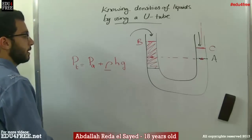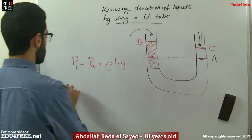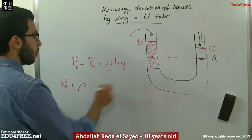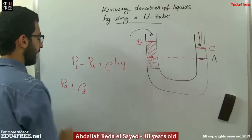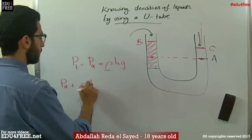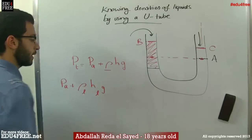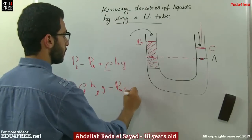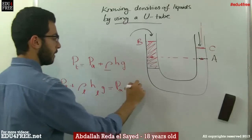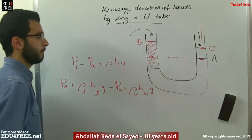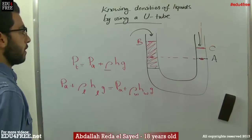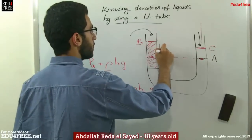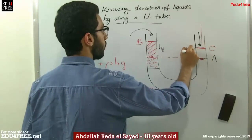We can say that the atmospheric pressure plus rho of the liquid, multiplied by the height of the liquid, multiplied by gravity, equals the atmospheric pressure plus rho of water, multiplied by the height of water, multiplied by gravity. This is the height of liquid and this is the height of water.